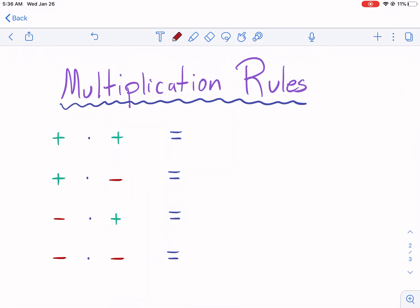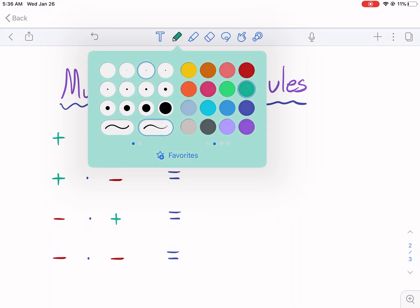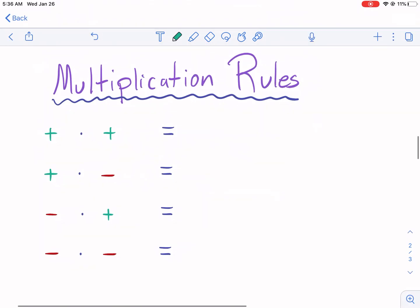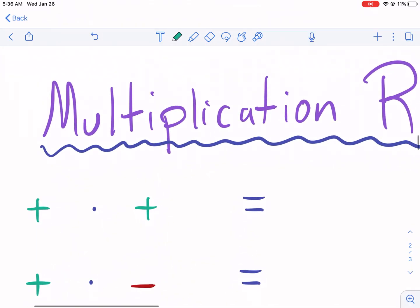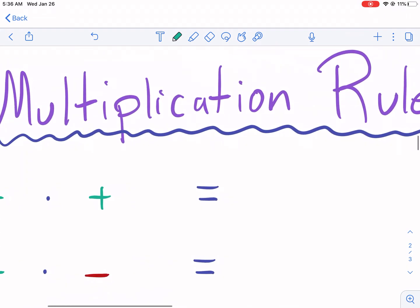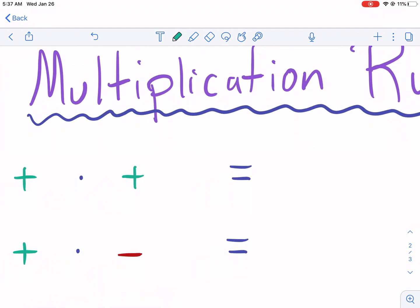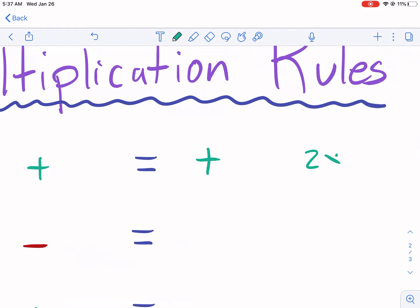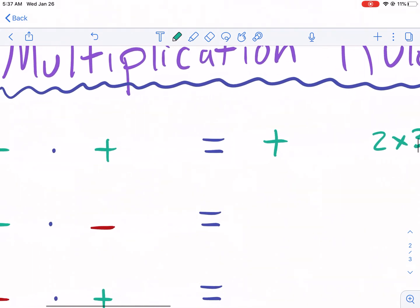But basically, this is going to be a summary of the rules that we have. So if we have a positive number times a positive number, these are multiplication rules, thus the title. If we have a positive number times a positive number, we are going to get a positive number. This is just like you have before. If we have two times three, we all know that's six. Positive times positive equals a positive number. They're all positive.